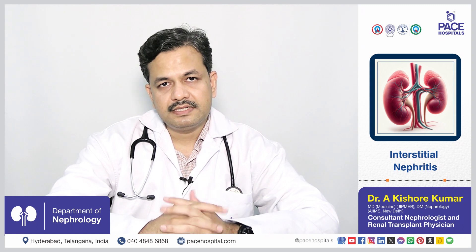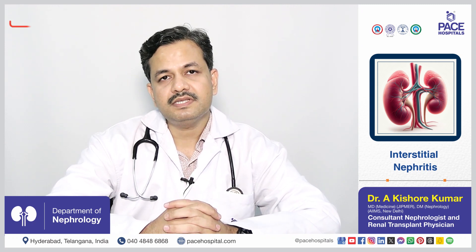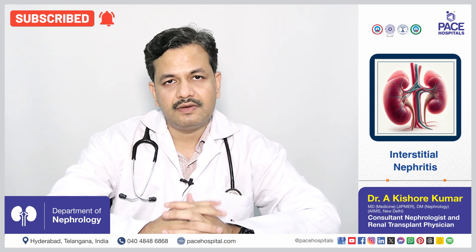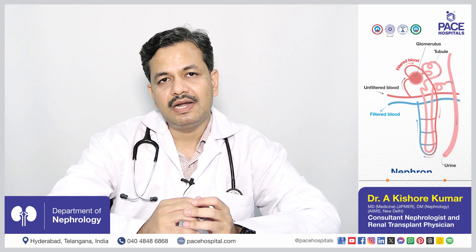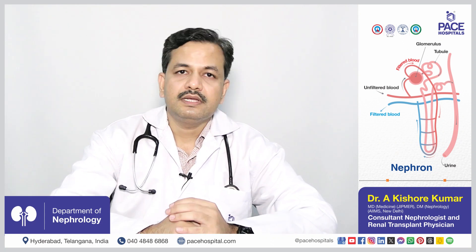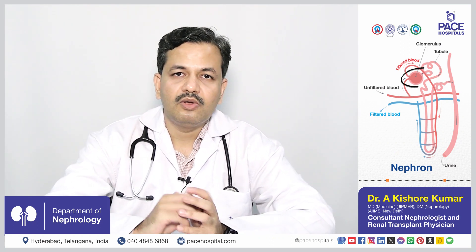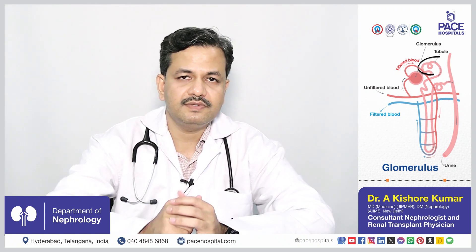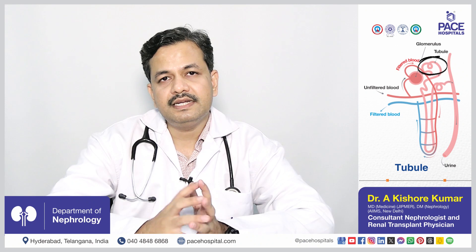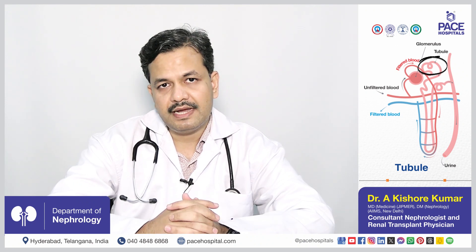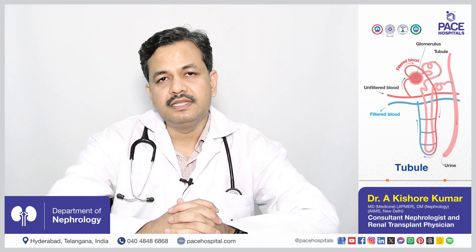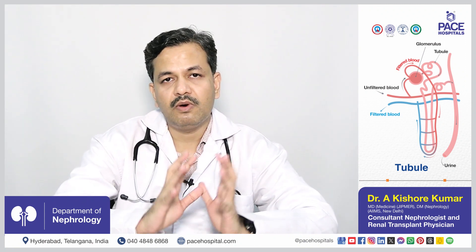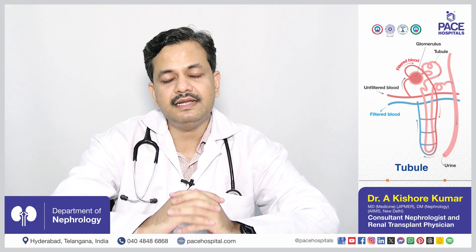To understand the term interstitial nephritis, we need to know about the structure of the kidney. Each kidney — we have two kidneys in our body — has small units called nephrons. There are two parts of a nephron: one is a globular structure called the glomerulus, and there is a tube connecting to it called the tubule. Each kidney has 10 lakh such units, closely packed. The space between these units is called the interstitial.